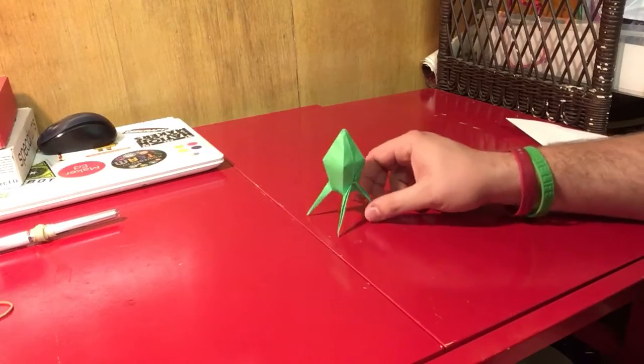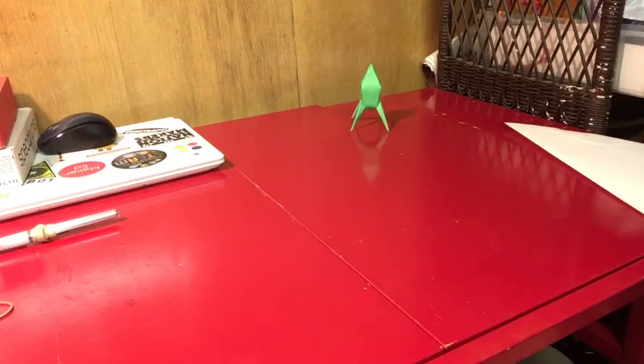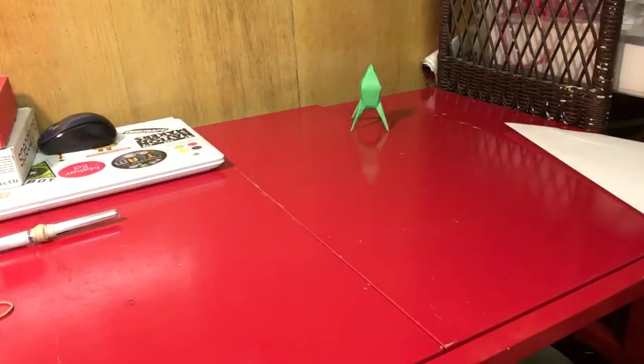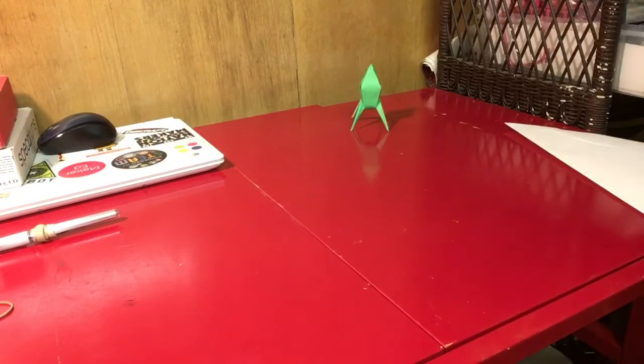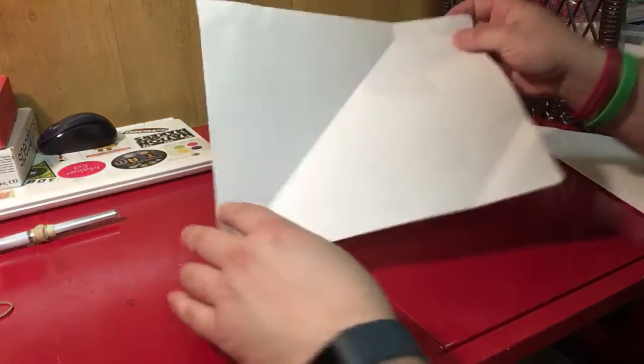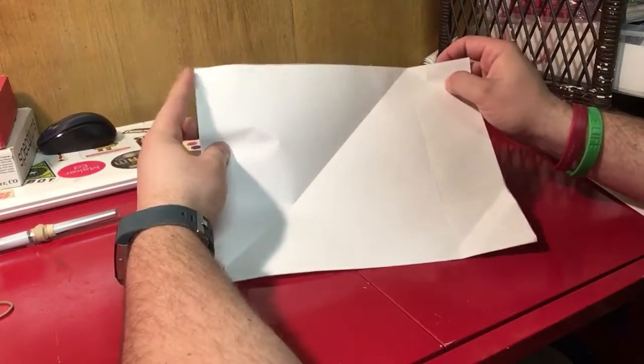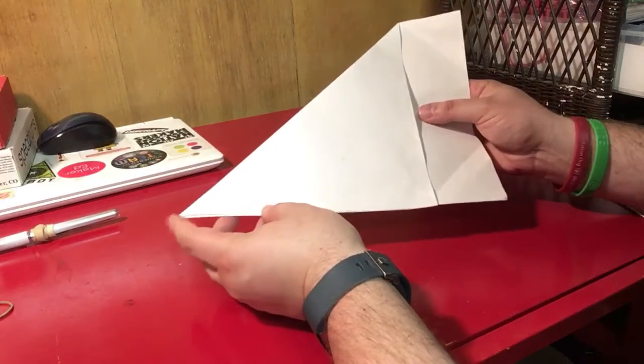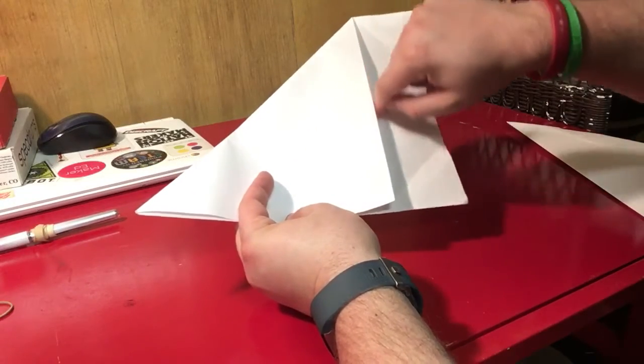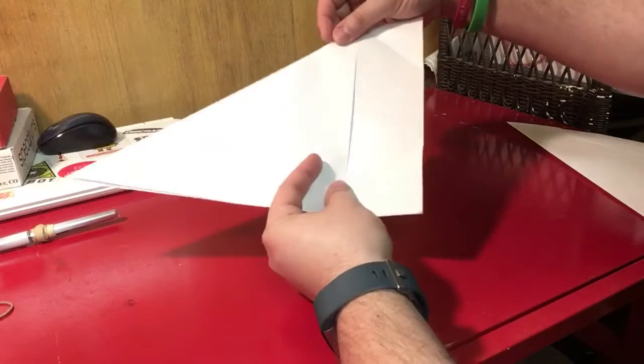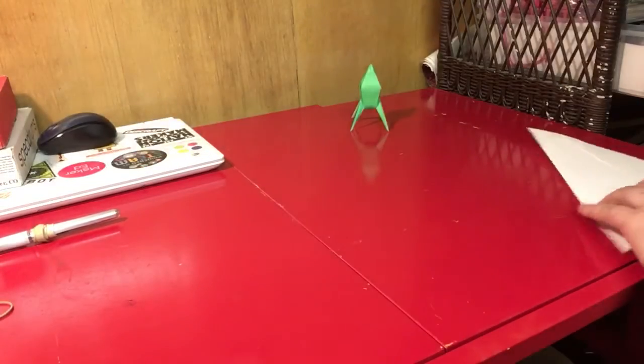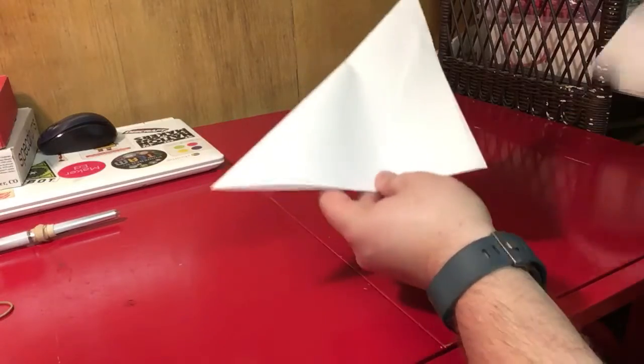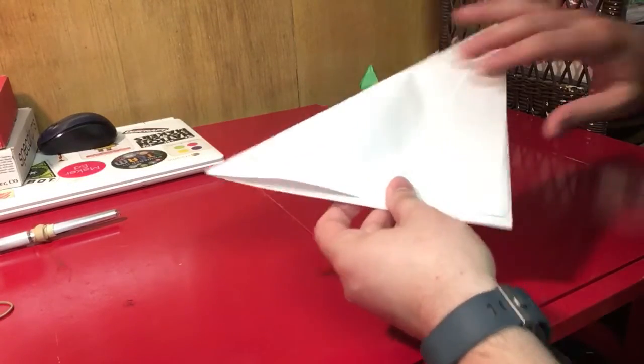You're going to need a square piece of paper. If you don't have origami paper, I'll show you using copier paper. Take a regular piece of paper, turn it horizontally, take a top corner and fold it down so your edges line up and it comes to a point. Then cut off that rectangular piece. When you do that, you're left with this triangle, which is actually a square.